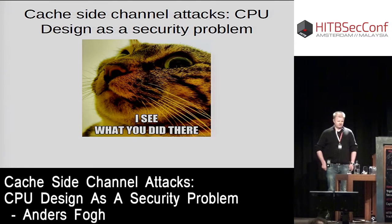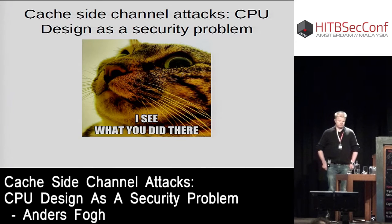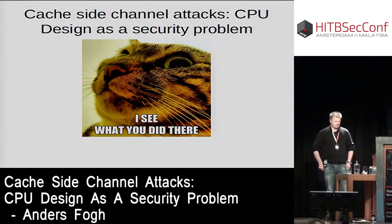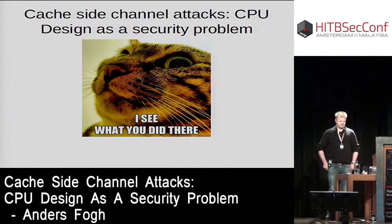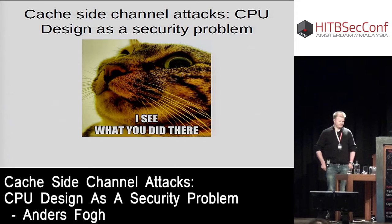About four hours later, I wrote my first cache side-channel attack. The interesting thing was that I was actually running my Rowhammer mitigation in the background doing long-term testing, and it triggered. I detected my cache side-channel attack as a Rowhammer attack and was like, what's going on here? That became the start of a year of researching what you can do with the caches in modern CPUs, and what you're about to hear is some of the results from that year.